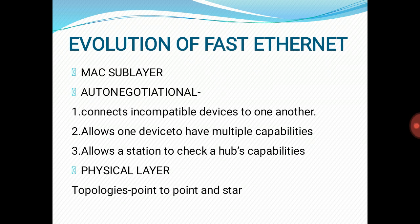We will see the evolution of Fast Ethernet, covering the MAC sublayer and physical layer. A main consideration in the evolution of Ethernet from 10 to 100 Mbps was to keep the MAC sublayer untouched. However, a decision was made to drop bus topologies and keep only star topologies. For star topology, there are two choices: half duplex, where stations are connected via a hub, and full duplex, where the connection is made via a switch with buffers at each port.